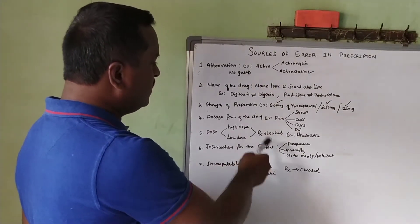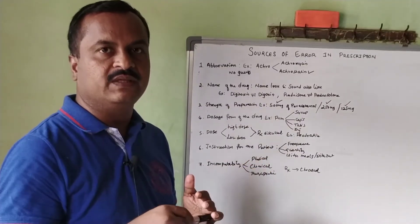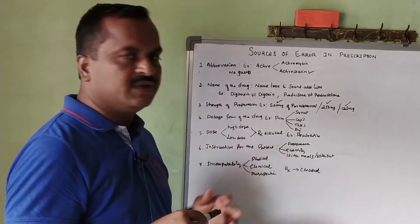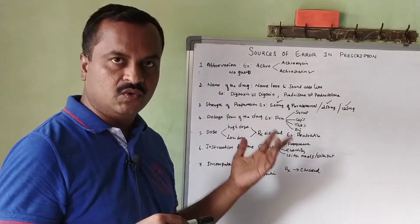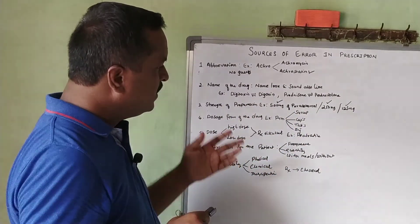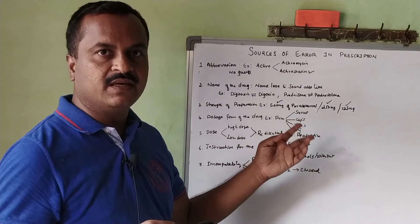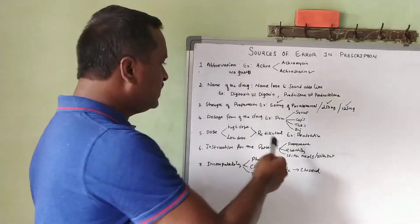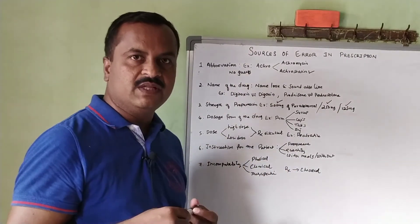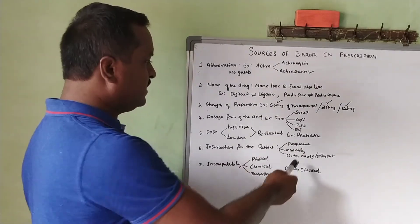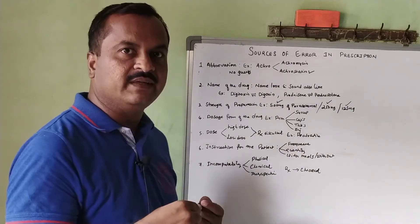The sixth error relates to instructions to the patient — when, how, and where to take the dosage form. This confusion must be eliminated by the pharmacist. Sometimes the prescriber does not mention the frequency or how to use the medicine. It is the pharmacist's responsibility to clarify frequency for the patient — for example, two or three times a day, what quantity, whether with meals, without meals, before meals, or after meals.